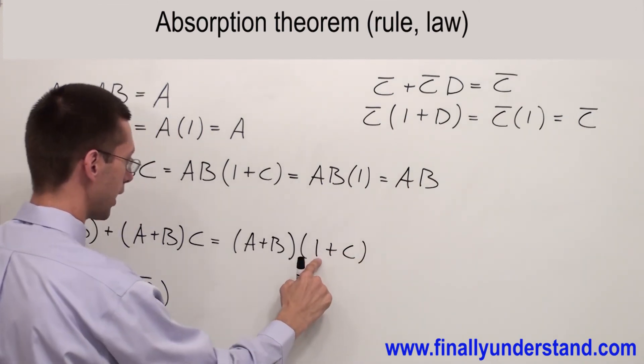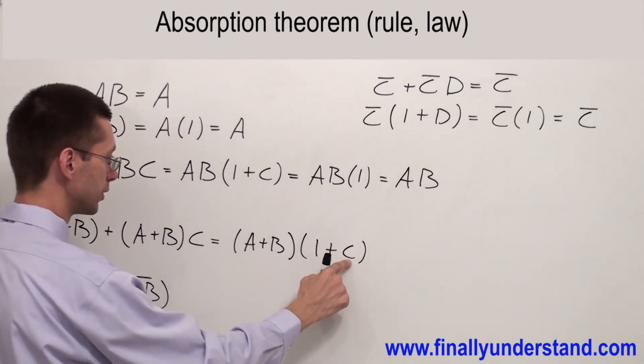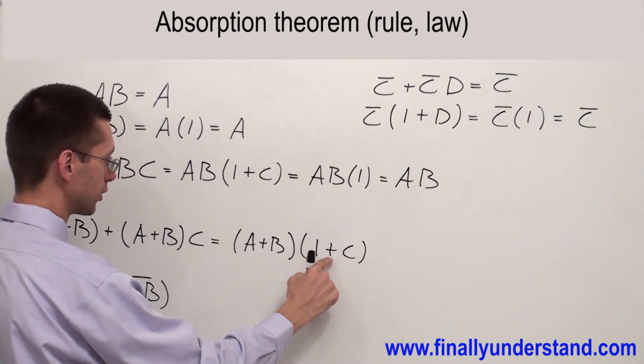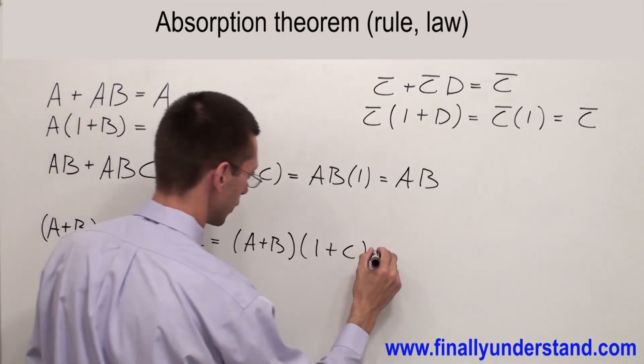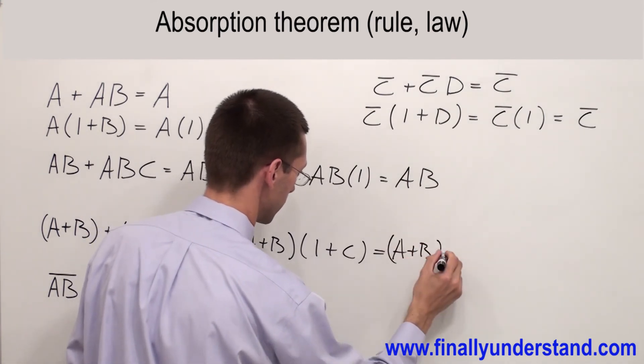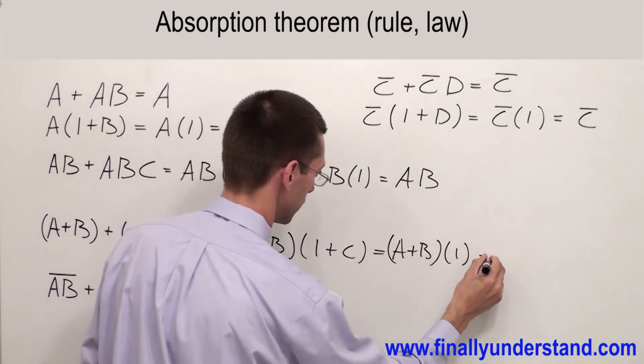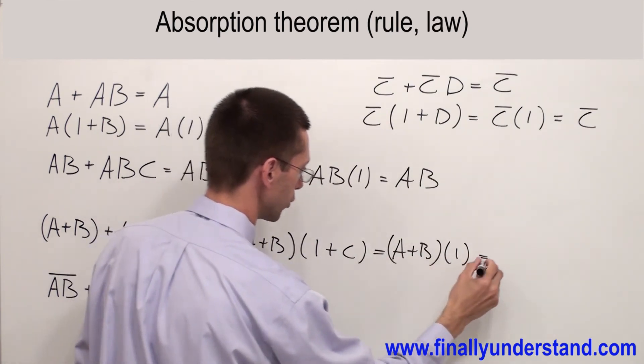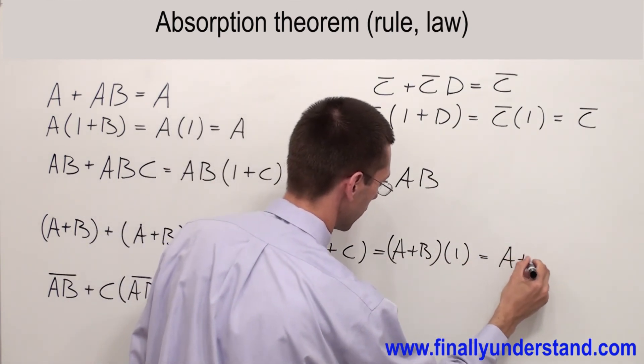Again, anytime we have 1 OR something else the answer is going to be always 1. That's why my answer is (A OR B) times 1. (A OR B) times 1 is always A OR B.